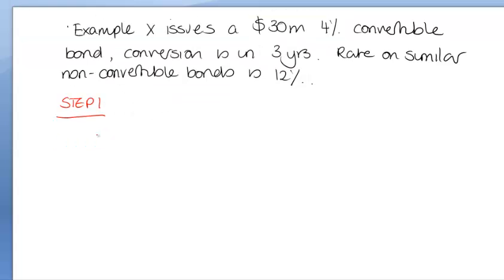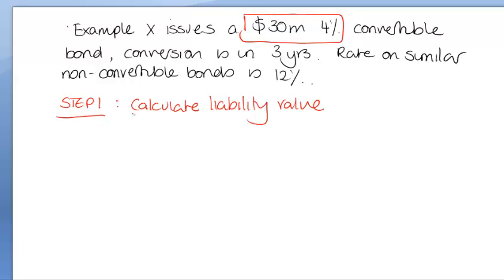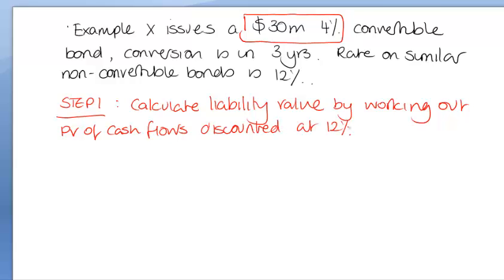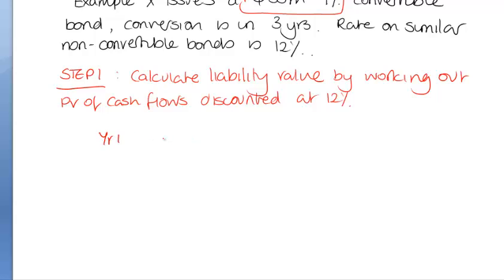So what do we do? Step one, I'm going to calculate the liability value. So it's a three year bond. How much interest is payable? The nominal value of the bond is 30 million at 4%. By working out the present value of the cash flows and discounting those at 12%.